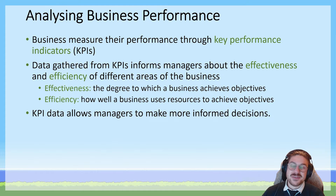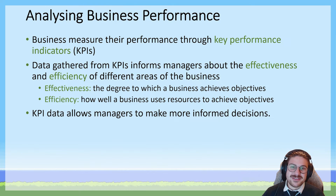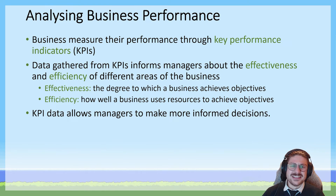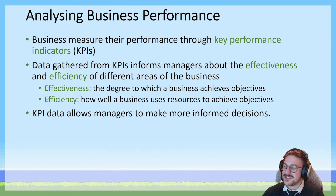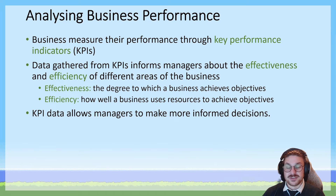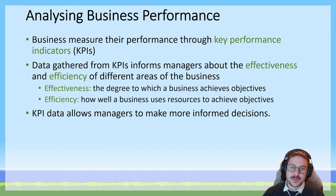Take for example business objectives from operations management. One of your business objectives for operations management is to be very efficient and effective. We can look at key performance indicators to do with levels of wastage and levels of productivity to determine whether or not our business is being efficient. We know that business objectives included things like making a profit — from key knowledge point 3.1.2 — and that efficiency and effectiveness from operations has an impact on the profitability of a business.